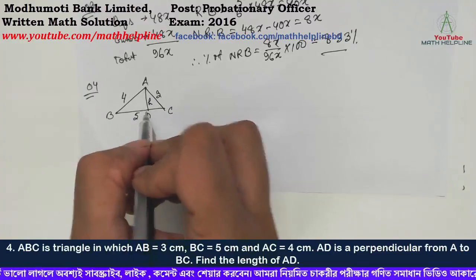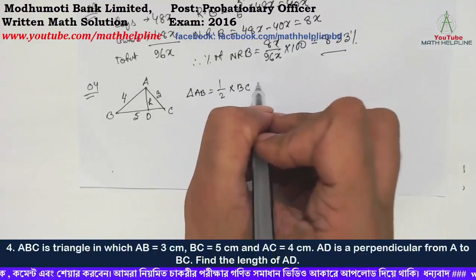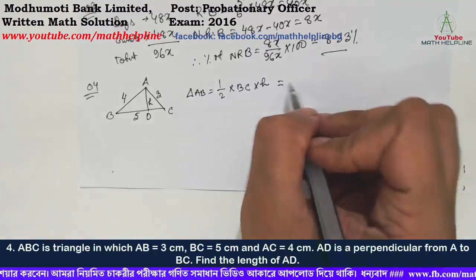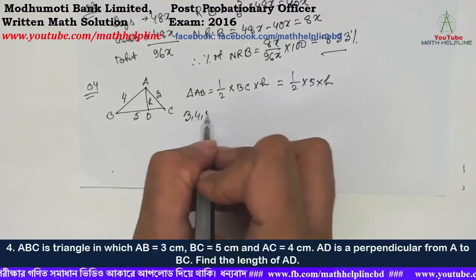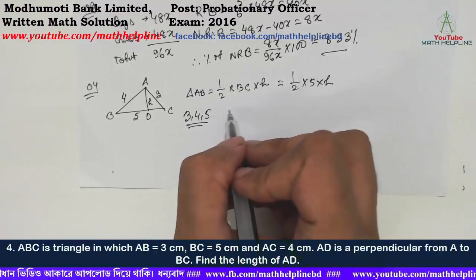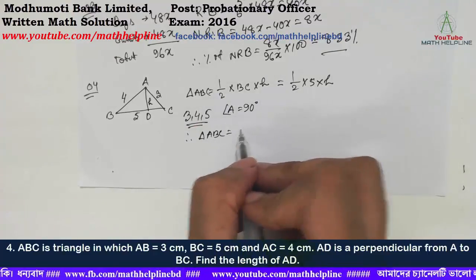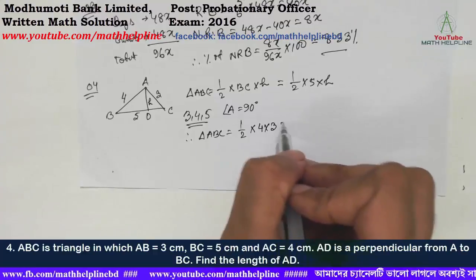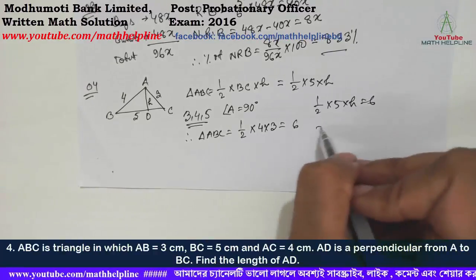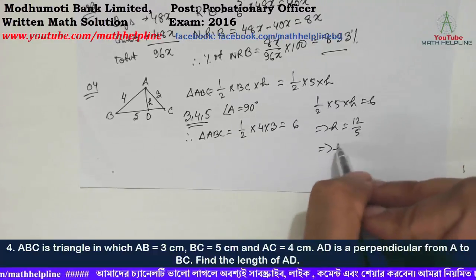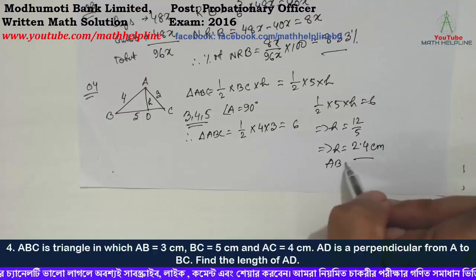Area of triangle ABC equals half into BC into height (AD). Area of triangle ABC equals half into BC into h, which gives 2 cm. Since angle A is 90 degrees in the right-angled triangle, using the area formula we find AD = 2.4 cm.